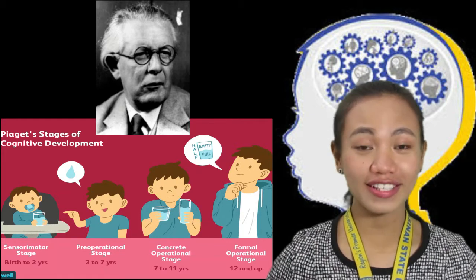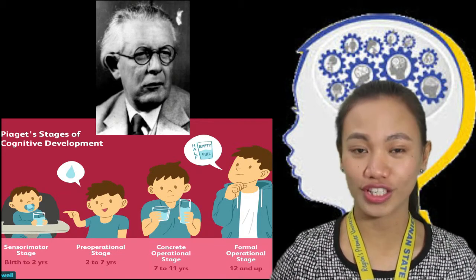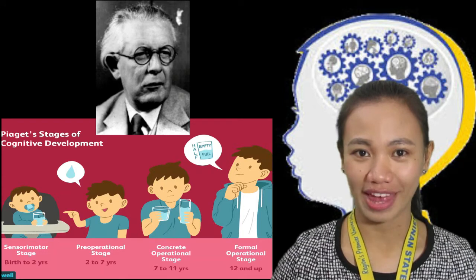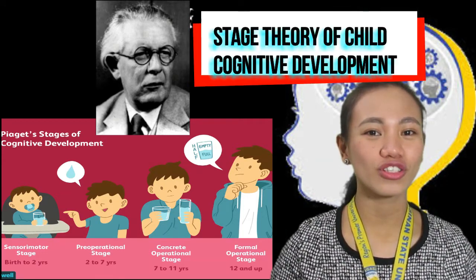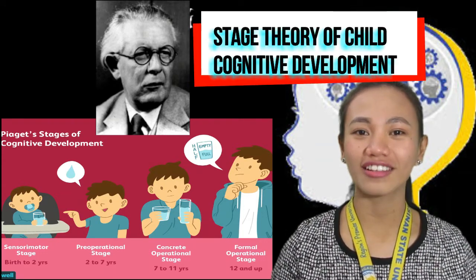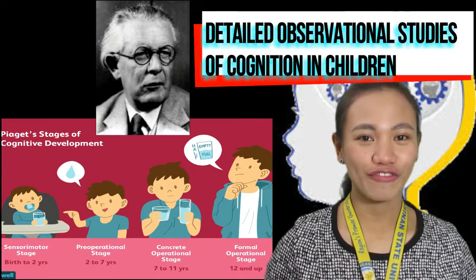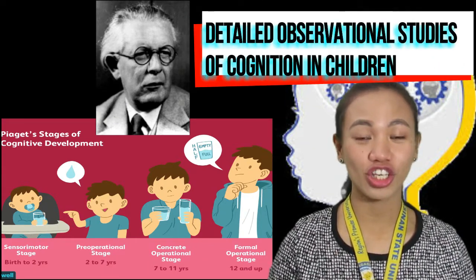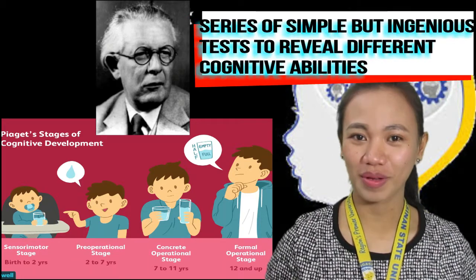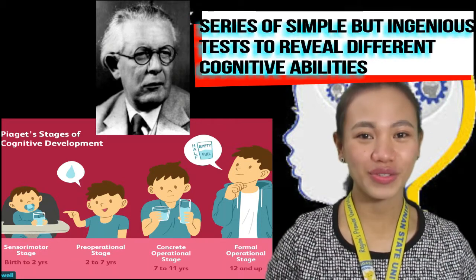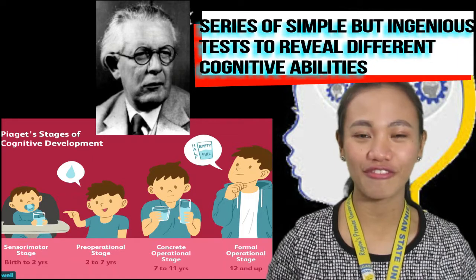Piaget was the first psychologist to make a systematic study of cognitive development. His contributions include a stage theory of child cognitive development, detailed observational studies of cognition in children, and a series of simple but ingenious tests to reveal the different cognitive abilities.